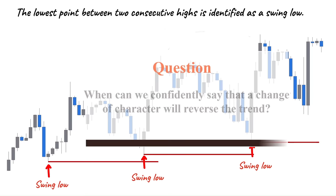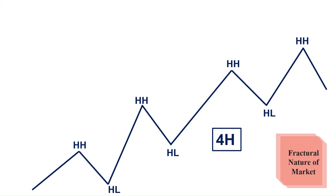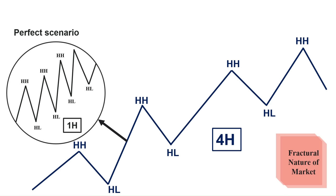Now here comes another question: when can we confidently say that a change of character will reverse the trend? To answer this, you need to understand the fractal nature of the market. Imagine we have an obvious uptrend on the 4-hour timeframe with a series of impulsive and corrective moves. The market continuously makes new higher highs and respects the higher lows. If you zoom into the 1-hour timeframe, you will notice that this 4-hour impulsive wave consists of impulsive and corrective moves that respect the higher lows in the perfect scenario.